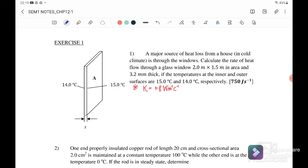Exercise 1: A major source of heat loss from a house in cold climate is through the windows. Calculate the rate of heat flow through a glass window 2.0 m × 1.5 m in area and 3.2 mm thick, if the temperature at the inner and outer surface is 15°C and 14°C respectively.